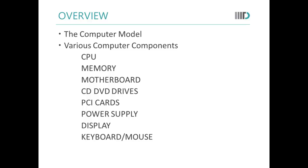We will be starting with a computer model about how input output devices and storage is linked to the CPU. Then we will be studying various components such as the functioning of the CPU, memory, motherboard, CD DVD drives, PCI cards, power supply, display, and keyboard and mouse in detail.